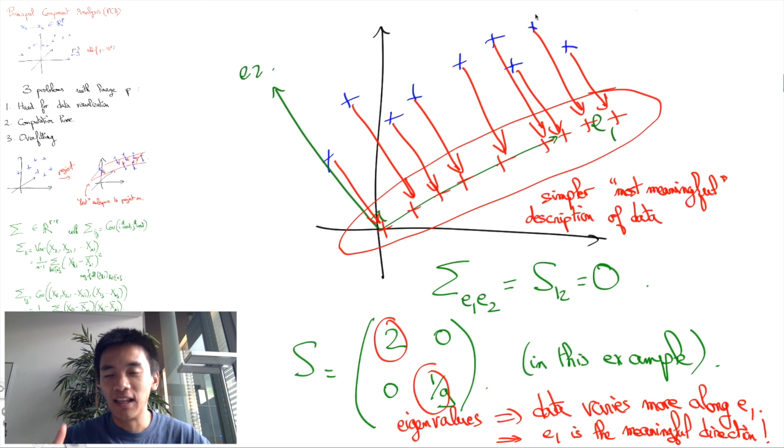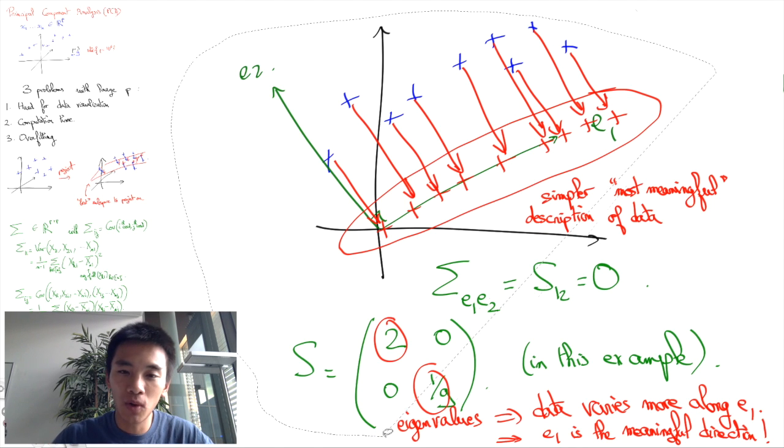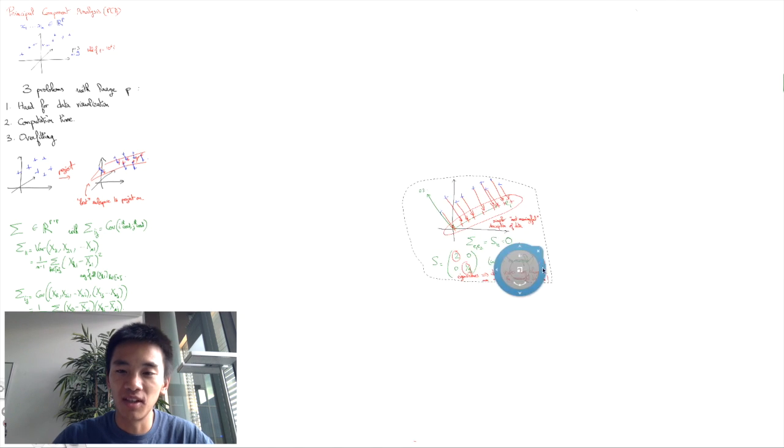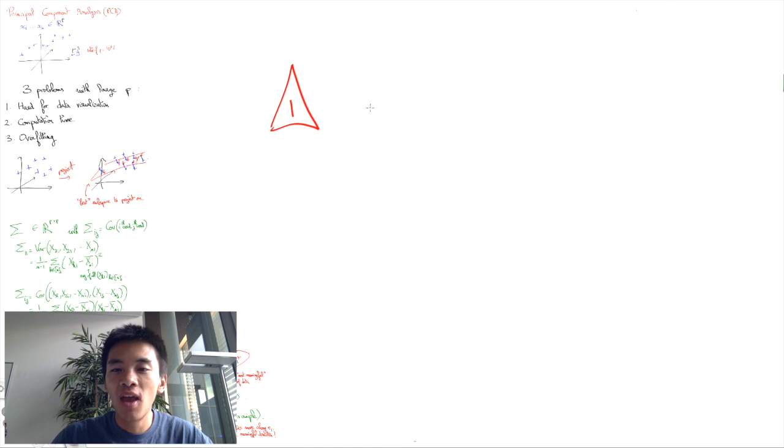However, I cannot insist enough on the limits of this approach. Most crucially, PCA only makes sense if the p different coordinates of the vectors x1 until xn that we started with, in some sense, are on the same scale.